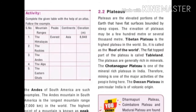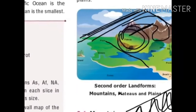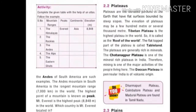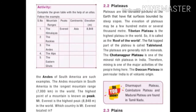Plateaus are the elevated portions of the earth that have a flat surface bound by steep slopes. The elevation of the plateau may be a few hundred meters or several thousand meters. The Tibetan Plateau is the highest plateau in the world and is called the roof of the world. The top part of the plateau is called tableland.